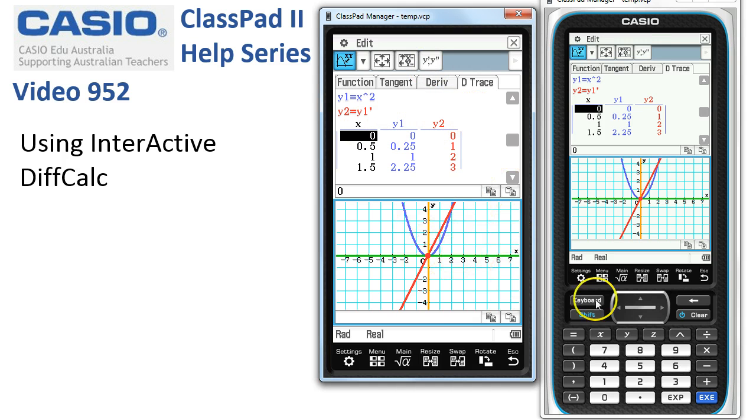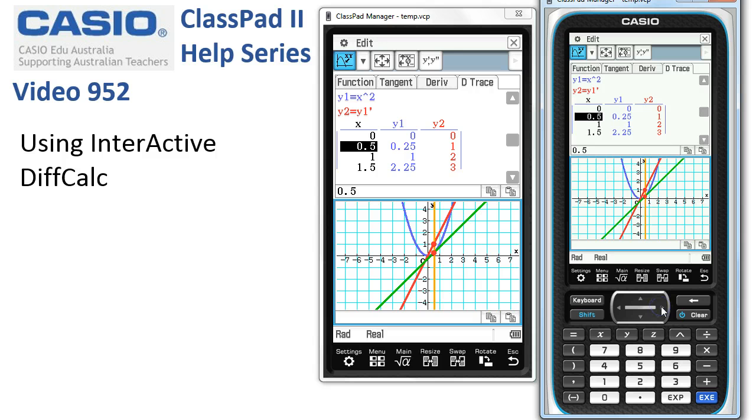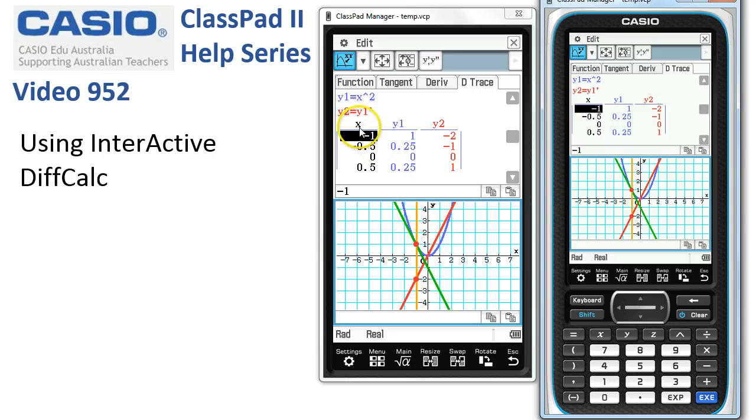As we tap right or left with the cursor key here, so let's go left a bit, what's happening is the orange line is just the vertical line saying when x is negative 1 in the table here, the value of the function is 1, which is this red dot, and the value of the derivative is negative 2, which is this one here.